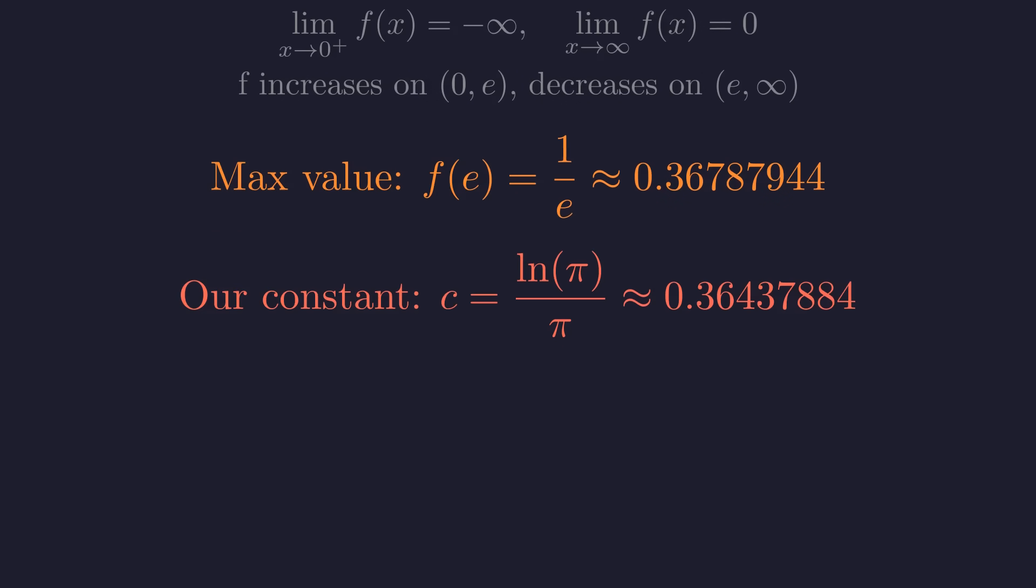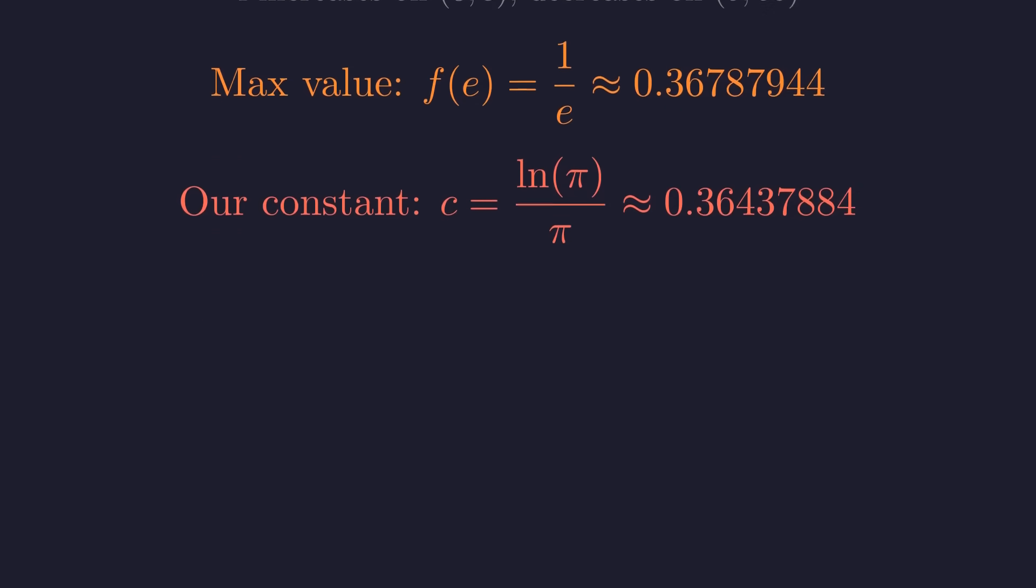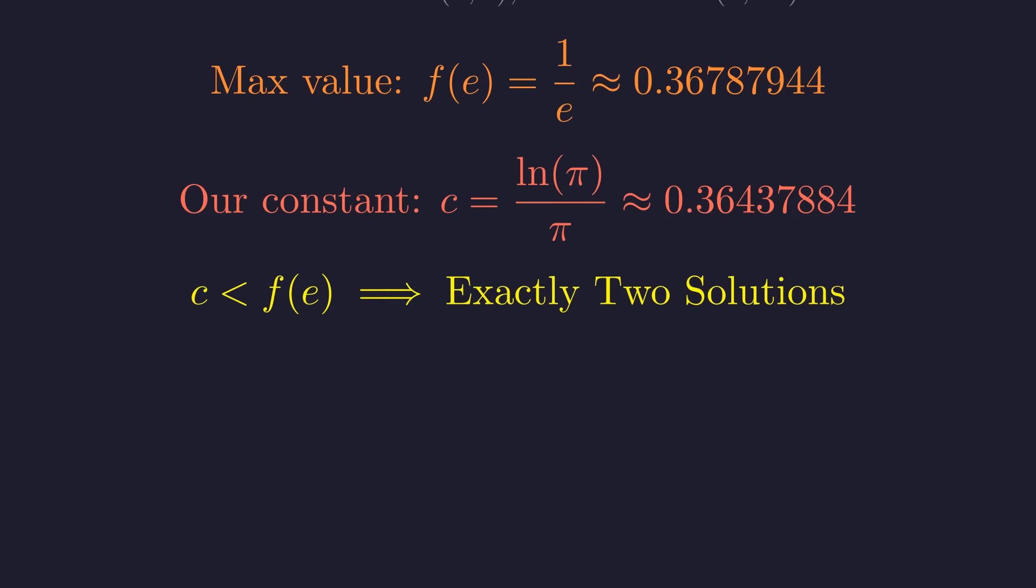Meanwhile, our constant c has a slightly different value. Since c is positive but strictly less than the maximum value of the function, we can conclude with certainty that there are exactly two real solutions to our original equation.